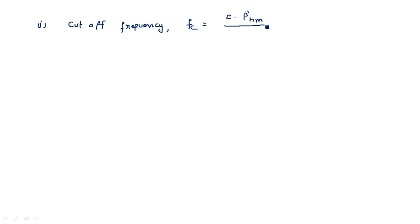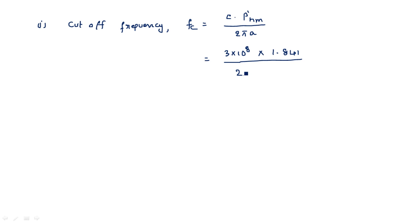Cutoff frequency fc equals c times p'nm divided by 2πa. That is 3×10⁸ meters per second times p'nm. For the dominant mode TE11 where m=1 and n=1, the value of p'11 from the table is 1.841, divided by 2π times 0.025 meters.